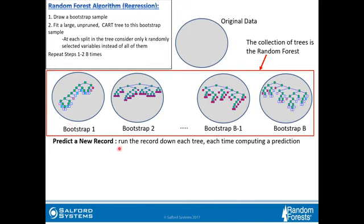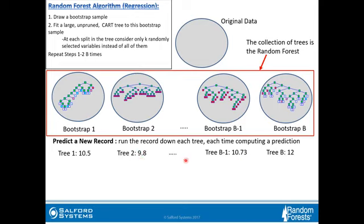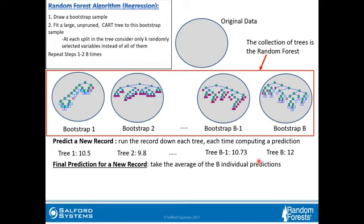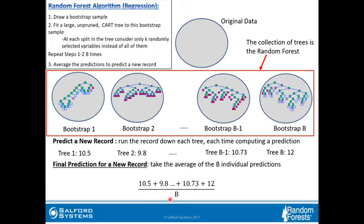To predict a new record, you run the record down each tree, each time computing a prediction. Maybe you run it down the first tree and get 10.5, the second tree and get 9.8, and so on. To predict a new record, you take the average of these b individual predictions. This is your final prediction, and you can repeat this for all records in a test dataset.